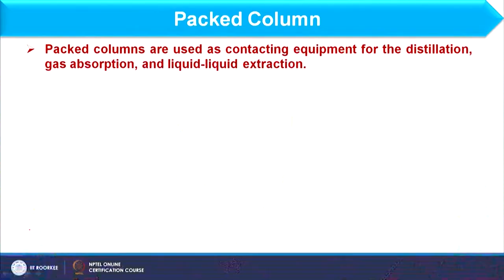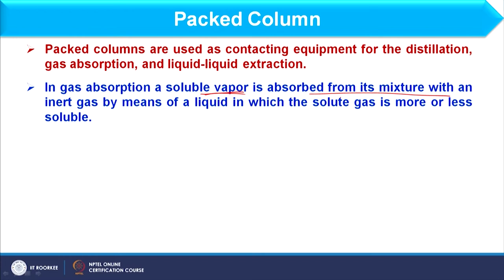As far as the packed column is concerned, first of all we will see its application in the chemical industry. As far as application is concerned, it is considered in different processes such as distillation, gas absorption, and liquid-liquid extraction. As far as gas absorption is concerned, a soluble vapour is absorbed from the gas mixture, and that mixture we consider as the inert gas. But the component is not inert — that can be transferred from gas phase to liquid phase.